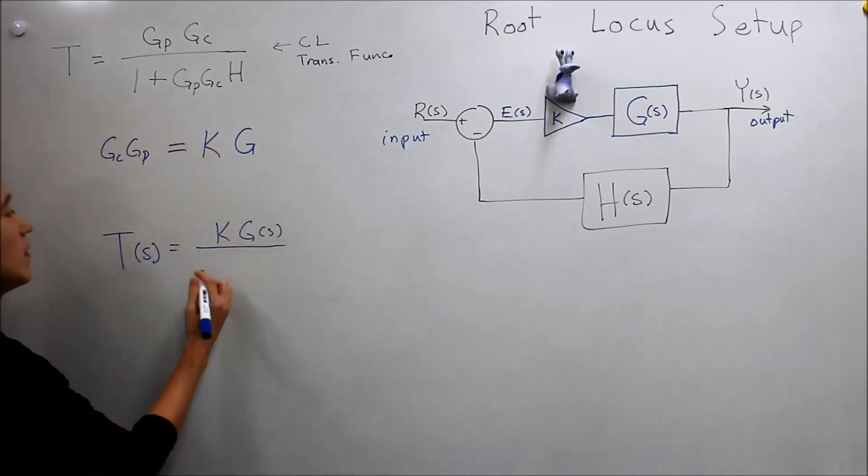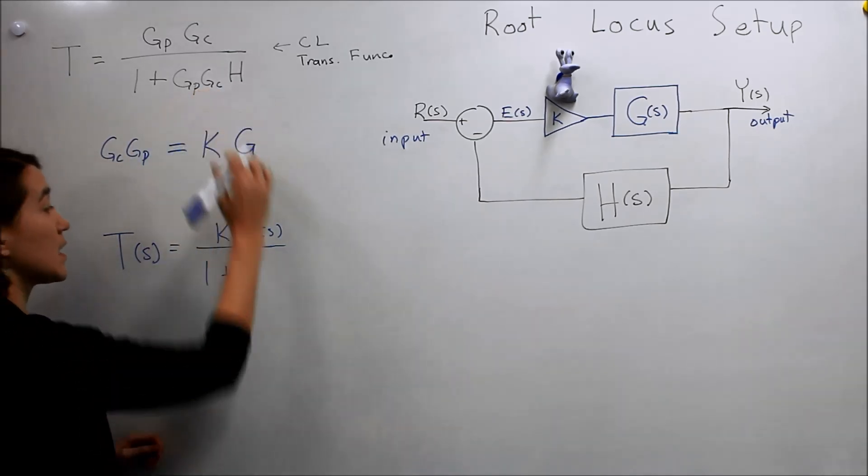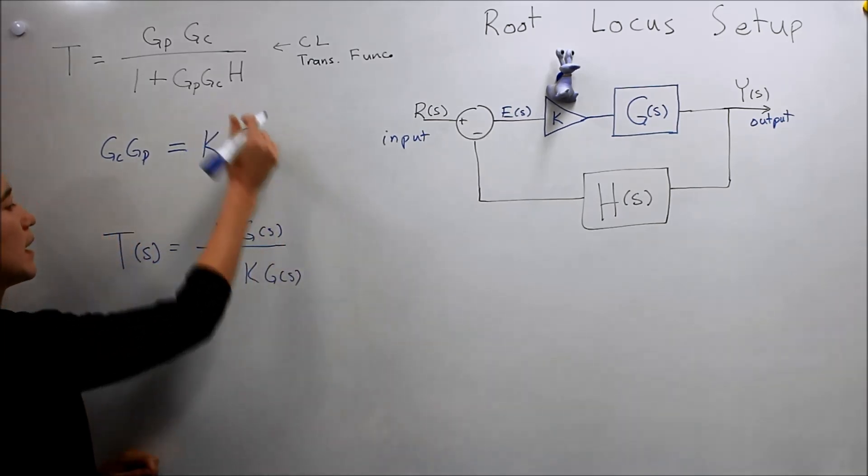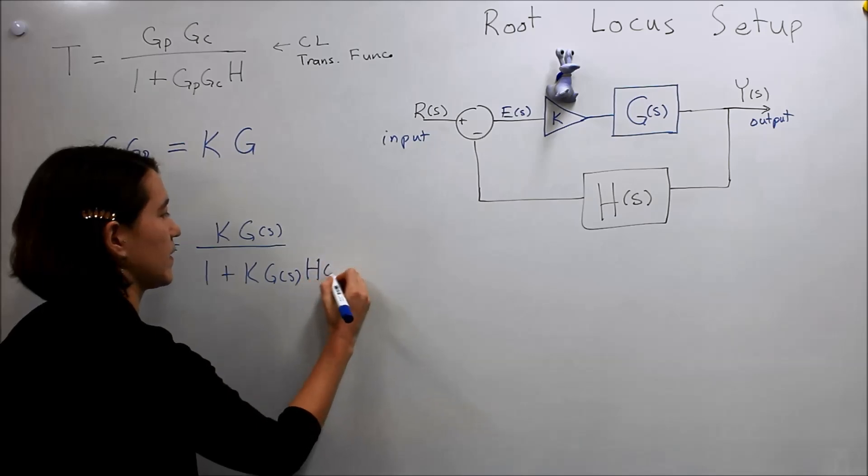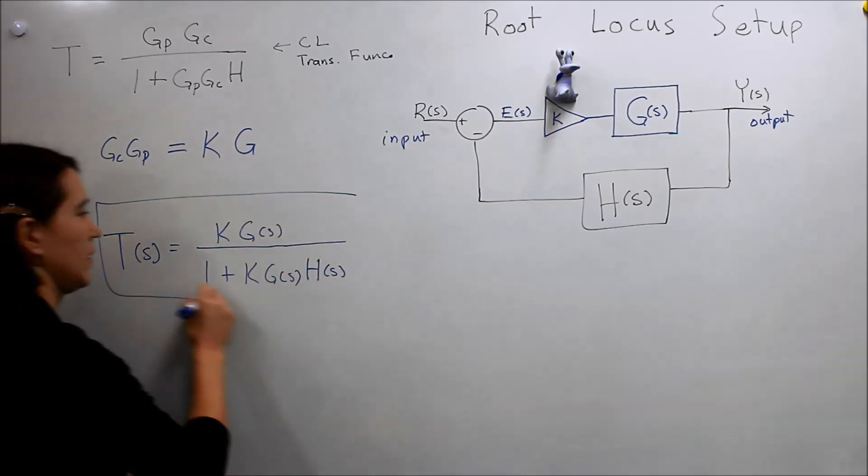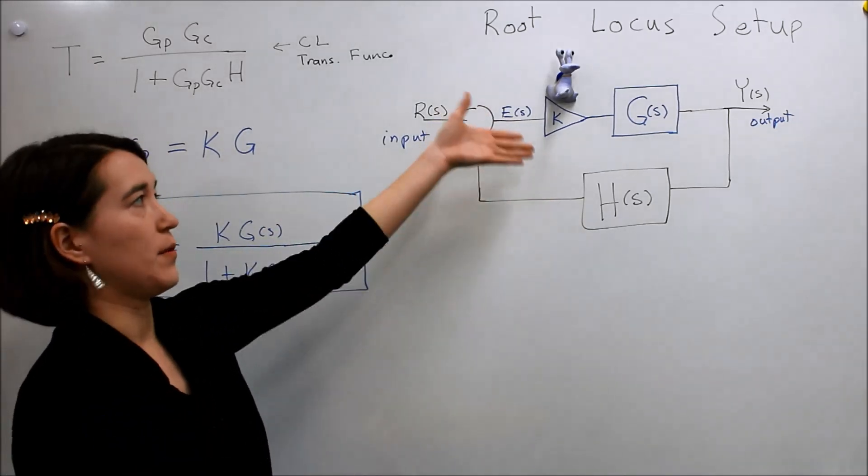and then one plus, now we're replacing the Gp, Gc, with K G of s again, and H of s. Okay, so this is our closed loop transfer function for this representation.